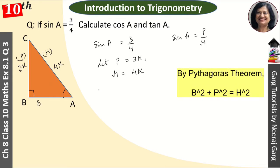First, we will use Pythagoras theorem to find the base. By Pythagoras theorem, base squared plus perpendicular squared equals hypotenuse squared. So B² plus perpendicular 3K squared equals 4K squared. That gives us B² plus 9K² equals 16K².